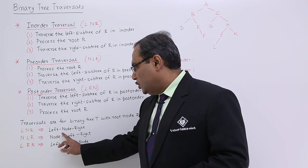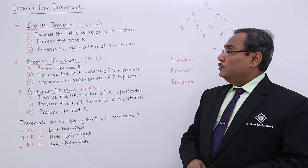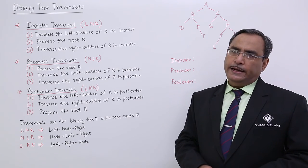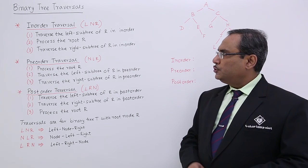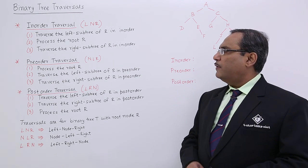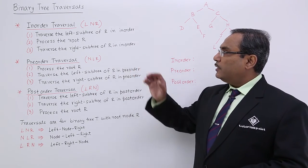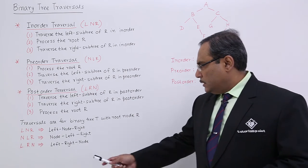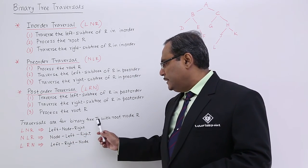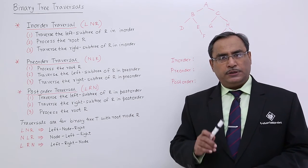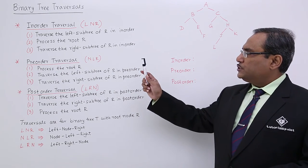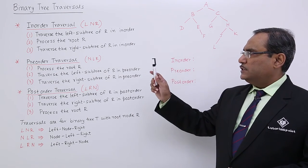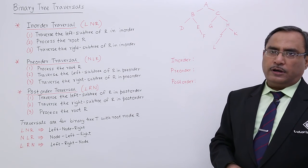LNR stands for left, node, right. So inorder traversal means: traverse the left subtree of R in order, then process the root, and traverse the right subtree of R in order. R here stands for the respective root node. First we traverse the left subtree of R in inorder traversal, then process the root, and then traverse the right subtree of R in inorder traversal.